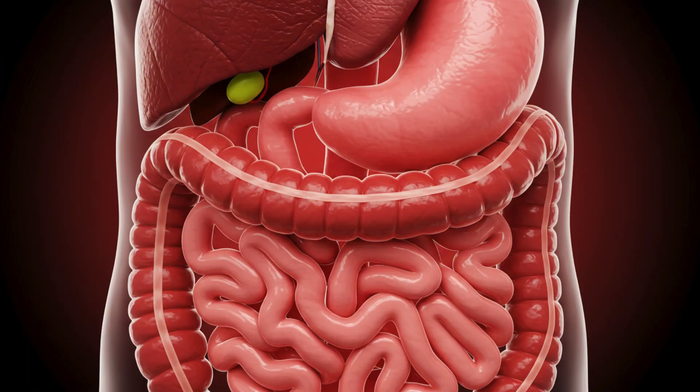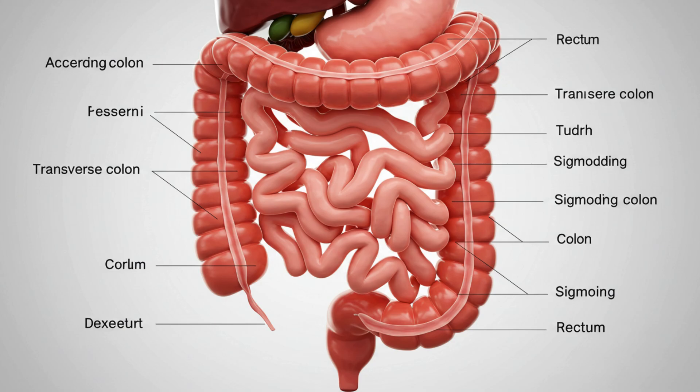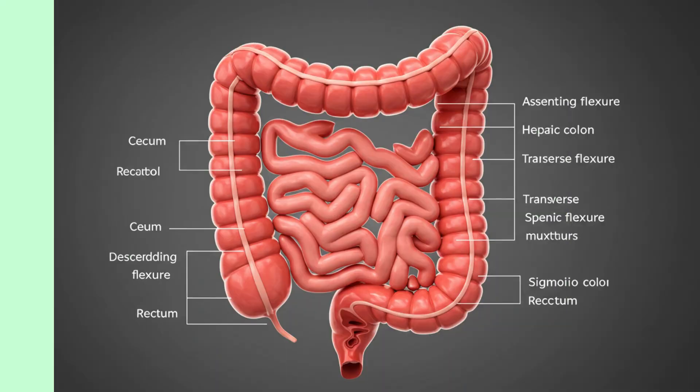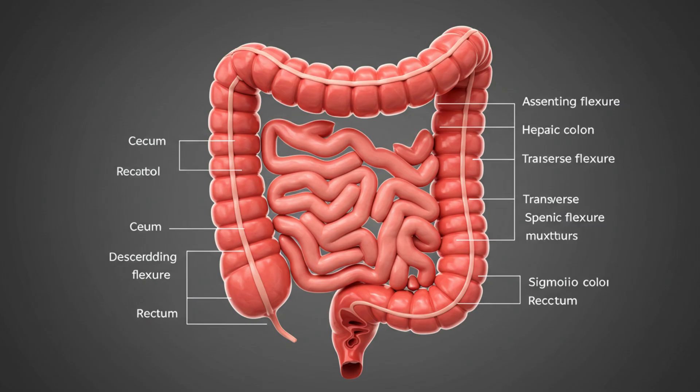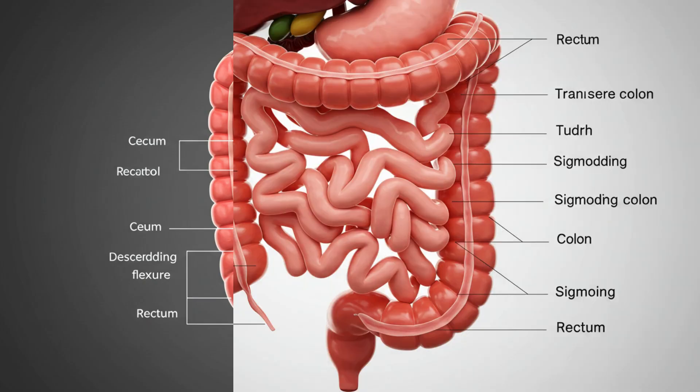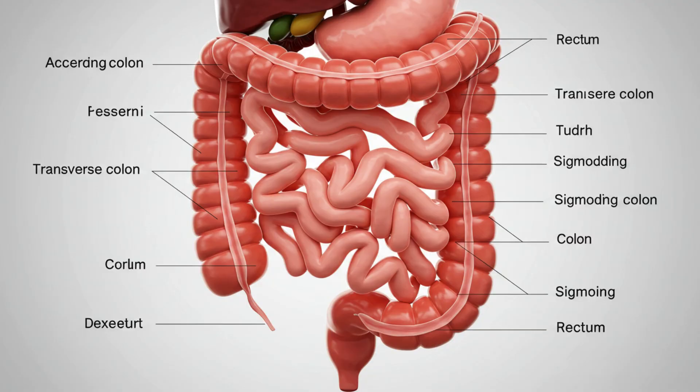Your large intestine, also known as your colon, includes the: 1, cecum; 2, ascending colon; 3, transverse colon; 4, descending colon; 5, sigmoid colon; 6, rectum.